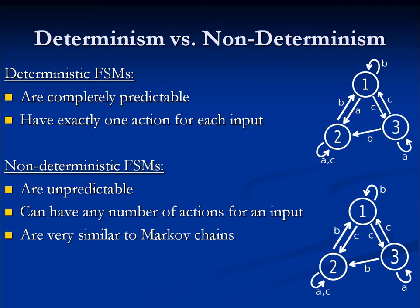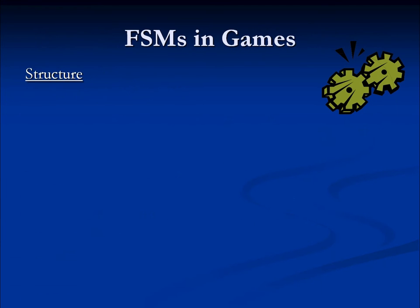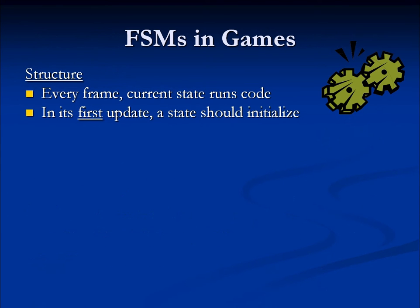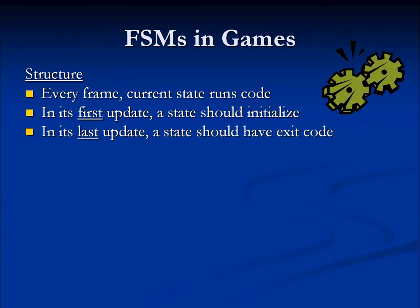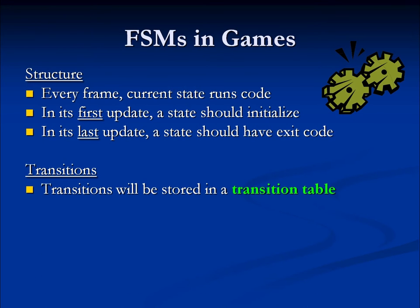It's limited to the number of possible transitions for your current state. At the end of the day, Markov chains are a great way to explain these FSMs in games. Every single frame, you have one state. That state will update, and on its first update you'll usually have an individual enter function, and on its last update you'll have an exit function. Each update, you'll look for a transition, and transitions are usually stored in a transition table, or in some cases they will be a tree of linked lists.